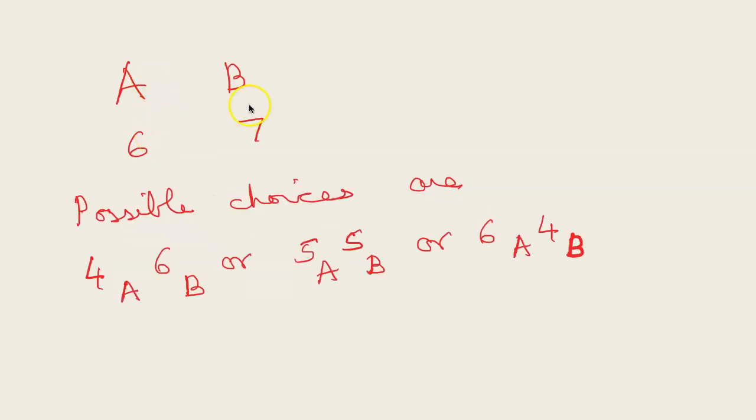So your possible choices are 4 from A, 6 from B or 5 from A, 5 from B or 6 from A, 4 from B because there are totally 10 questions and a student has to attempt at least 4 from each section.